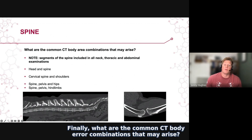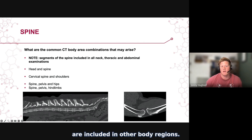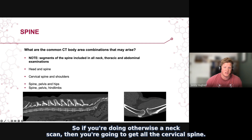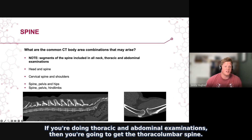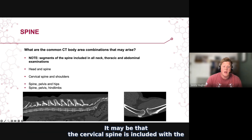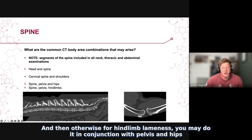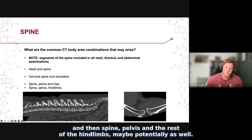Finally, what are the common CT body area combinations that may arise? Segments of the spine are included in other body region scans — a neck scan will include the cervical spine, and thoracic and abdominal examinations will include the thoracolumbar spine. Often in combination, head and spine may be done together. The cervical spine may be included with the shoulders in cases of lameness or cervical pain, and for hind limb lameness it may be done in conjunction with the pelvis, hips, and potentially the rest of the hind limbs.